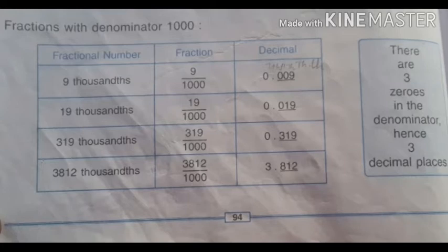Next, we say conversion of a decimal to a fraction. 0.5, how do we write? 5 by 10. 0.05, 5 by 100. So, two places, two zeros, 100, right?